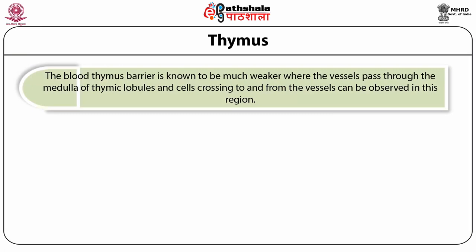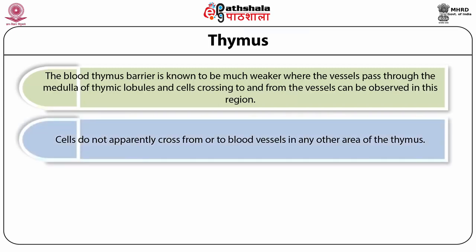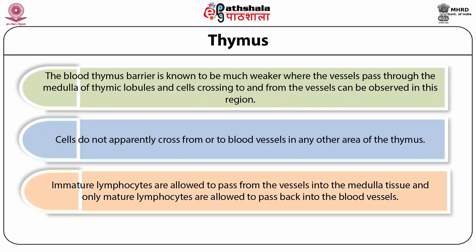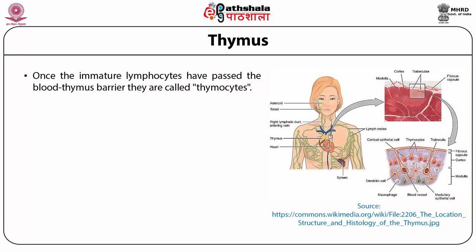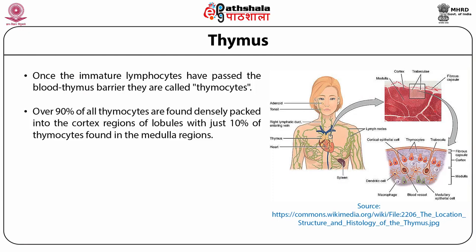The blood-thymus barrier is known to be much weaker where the vessels pass through the medulla of the thymic lobules, and cells crossing to and from the vessels can be observed in this region. Cells do not apparently cross from or to blood vessels in any other area of the thymus. Immature lymphocytes that have passed the blood-thymus barrier are called thymocytes. Over 90% of all thymocytes are found densely packed in the cortex region of lobules, with just 10% found in the medulla.